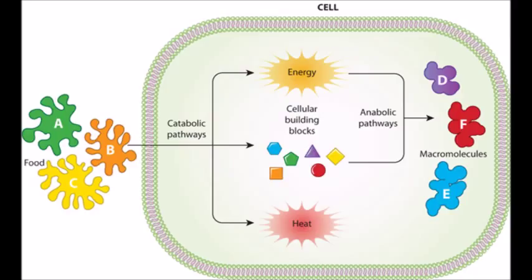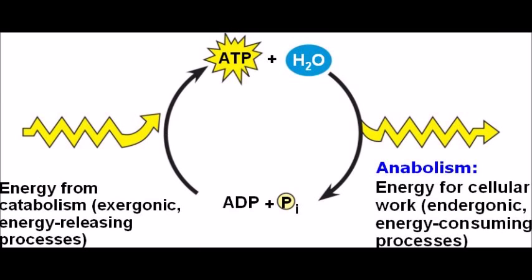The anabolic pathway takes that energy along with the small molecules and converts them to large molecules. Catabolism and anabolism are somewhat intertwined. Catabolism enters the cells together with ATP, and that ATP is going to be taken up by the anabolic pathway, converting ATP back to ADP, thus utilizing the energy. This slide shows basically the recycling cycle they are going through.